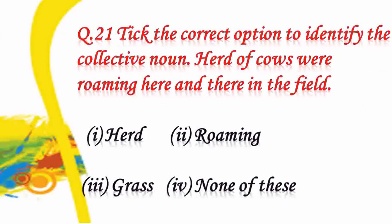Question number 21: identify the collective noun. Herd of cows were roaming here and there in the field. Options: herd, roaming, grass, or none of these. A collective noun is a group of things. So our answer is herd, option 1.